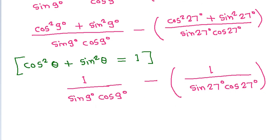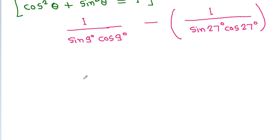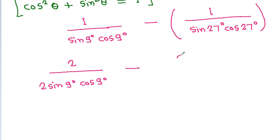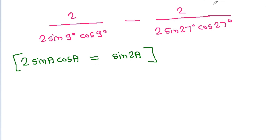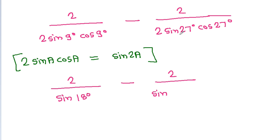Multiplying and dividing by 2, we get 2/(2 sin 9° cos 9°) minus 2/(2 sin 27° cos 27°). Using 2 sin a cos a = sin 2a, this becomes 2/sin 18° minus 2/sin 54°.